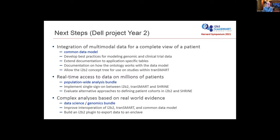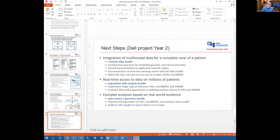The data science genomics bundle is focused on complex analyses based on real-world data. We want to improve interoperability between ITB2 and TransMart in a common data model to make it a more seamless environment for researchers — right now there are multiple products running on the same data model but they look and feel like different things. And it's important to be able to take data out of ITB2, pivot it into a format easier for machine learning models and other analyses, and store that on secure enclaves. With that, Jeff is up next.